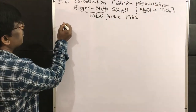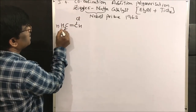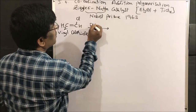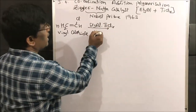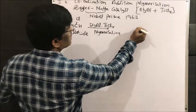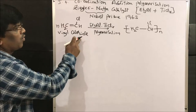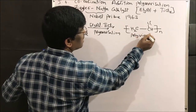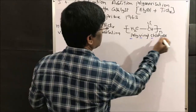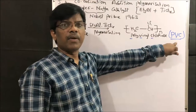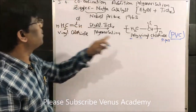For example, vinyl chloride — which is CH2=CHCl — upon polymerization using triethyl aluminum and titanium tetrachloride gives the polymer (CH2-CHCl)n, which is polyvinyl chloride, commonly known as PVC. PVC is commonly used as plastic pipes.